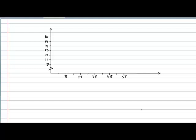With all these clues in hand, we are now ready to draw the graph. Before you pause the video and prepare your grid, let me discuss efficient ways of calibrating the axes. The y-axis is easy to calibrate because we already know the maximum is 16 and the minimum is 10, so the graph stays between those values. For the x-axis, the easiest approach is to start at the variable h and jump by increments of h.